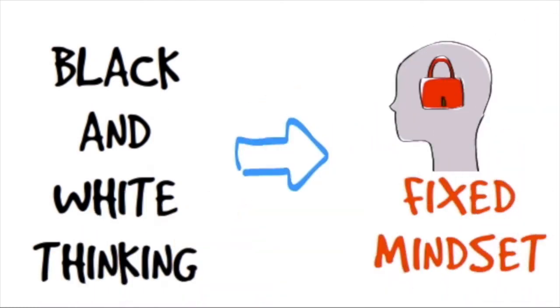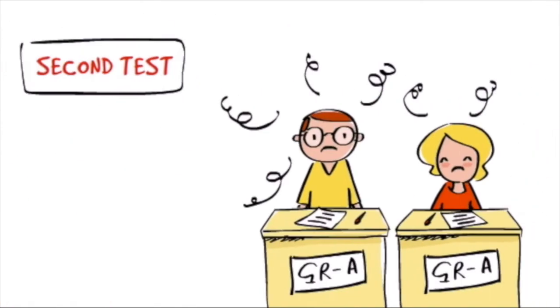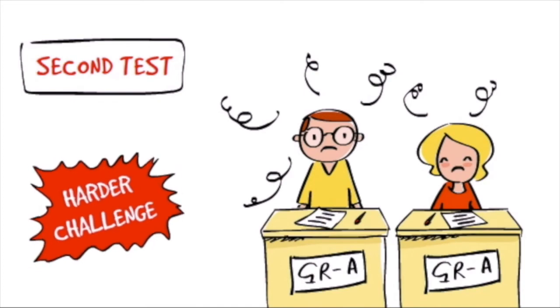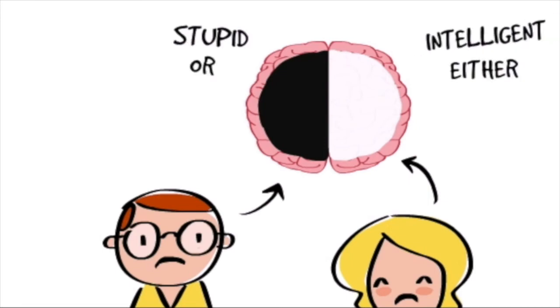Remember back to those kids that did that puzzle that were praised for their intelligence. Remember that their unconscious mind was thinking, hang on a second. You're thinking, if I take this harder challenge, and if I fail, I'm not intelligent anymore. Which means that I'm either intelligent, or I'm stupid. That's black and white thinking. Either or. White or black.